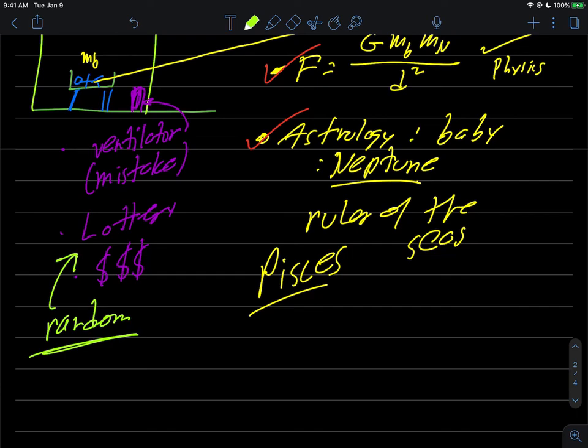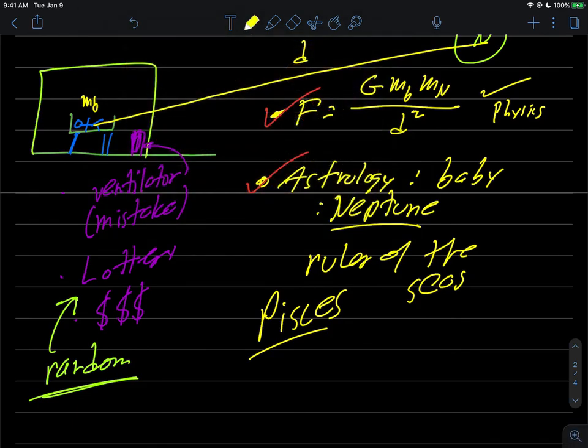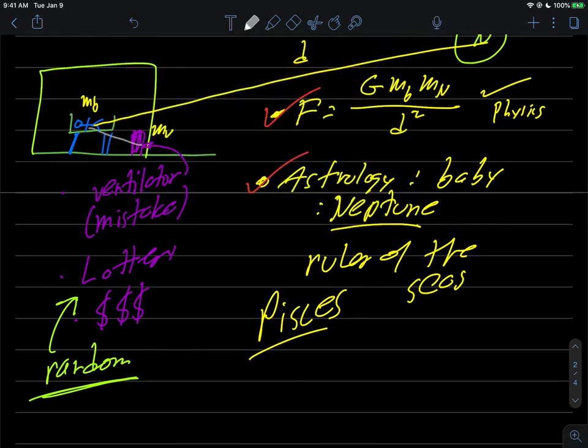And so the issue I have with this, and this will be the last thing that I have for my jab here, is that in this situation then, look, the ventilator has a mass, and the ventilator and baby also have a distance between them which is this line right here.